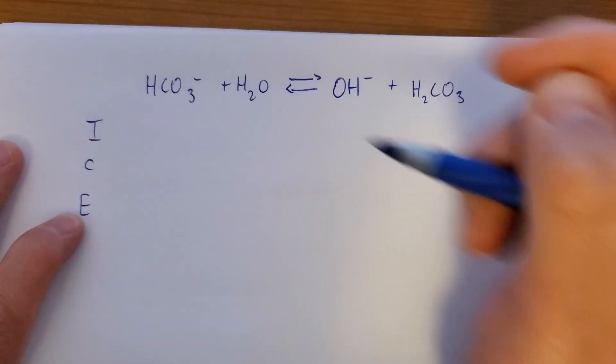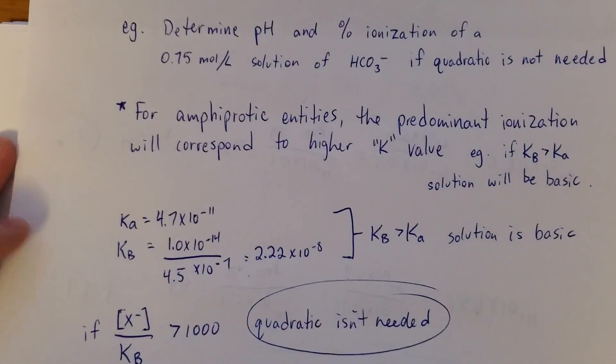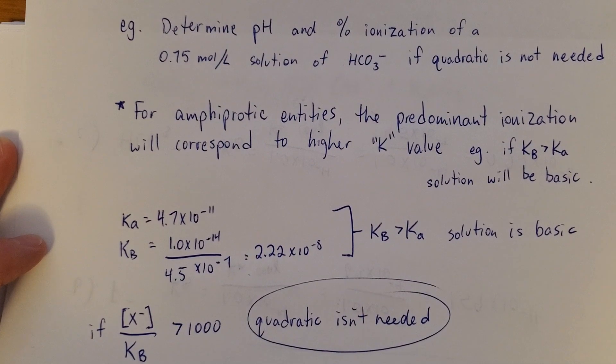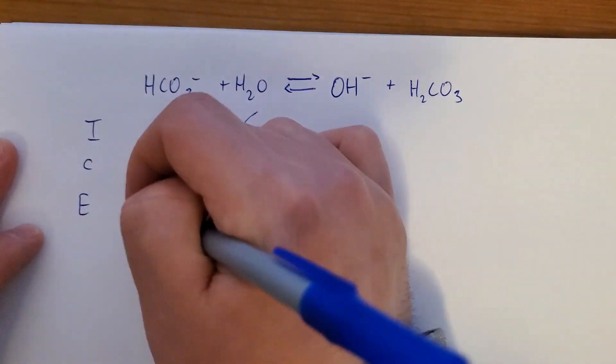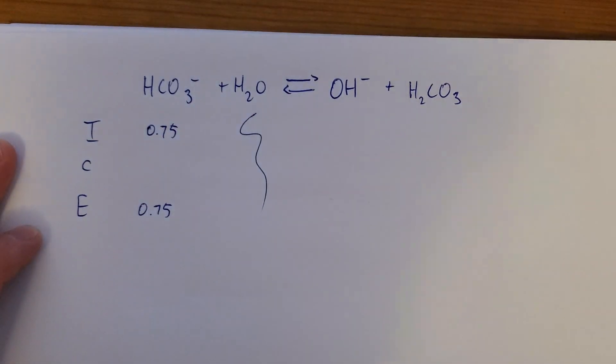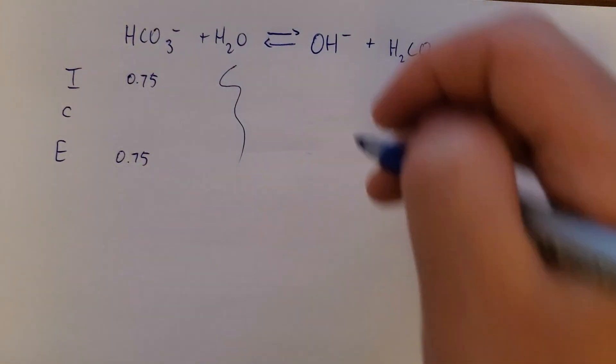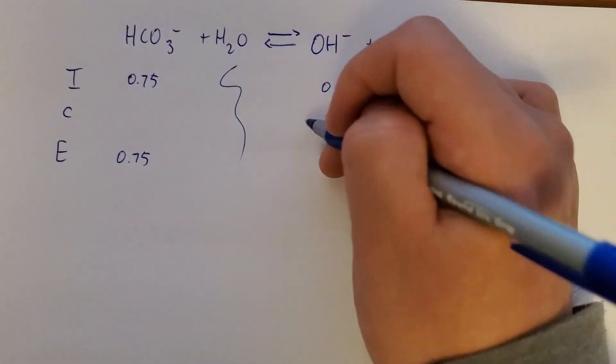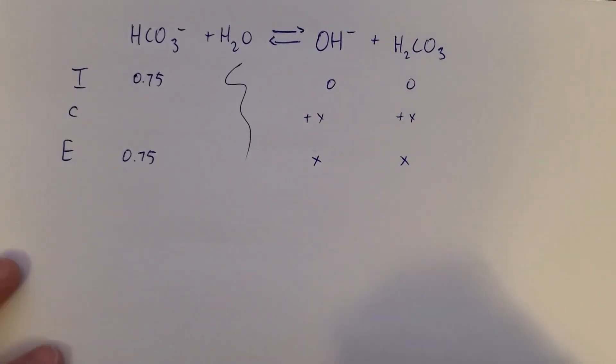ICE table. Don't care about water. My initial concentration was 0.75. And we learned that we can keep it at that since the concentration divided by KB was greater than 1,000. These guys started at zero. And we're going to call them X.